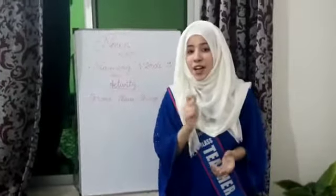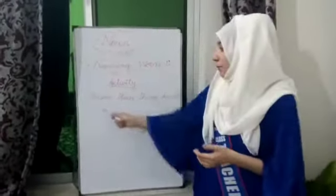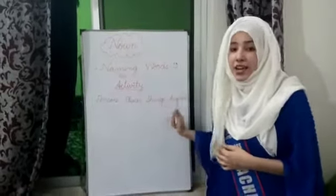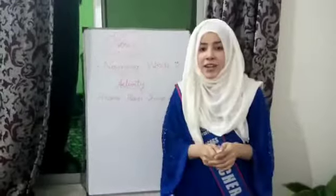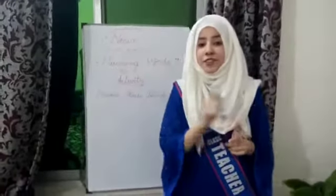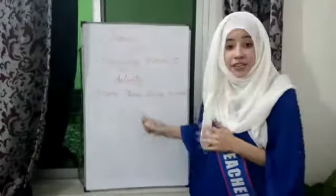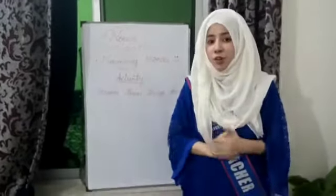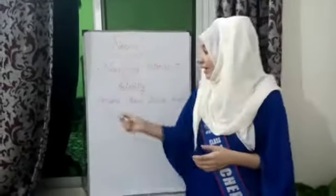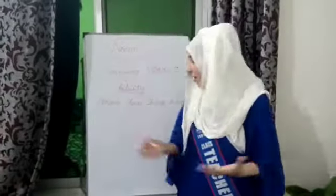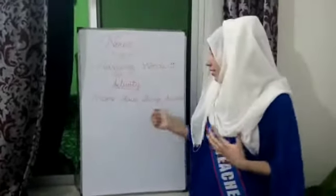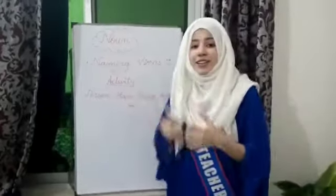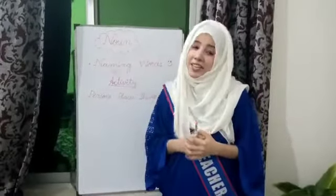Here is an activity for all of you to do at home. Make four columns for persons, places, things, and animals. Find all the nouns in your home and write them in their respective column. For example, find the persons in your home like your mother and father and write them in the given column. Then find the places, things, and animals and write them in the respective columns. Thank you very much.